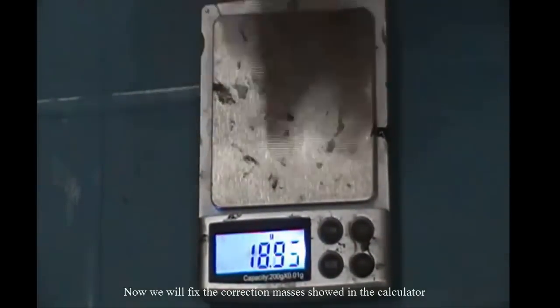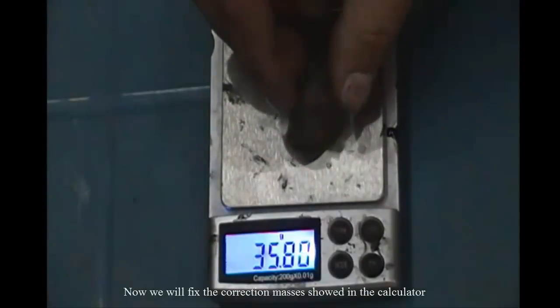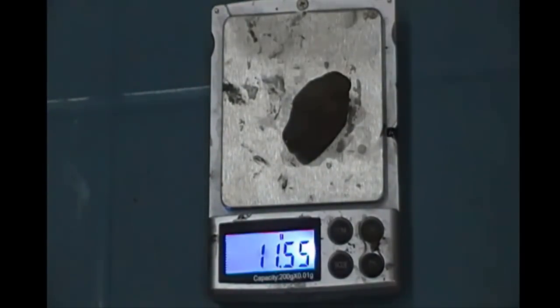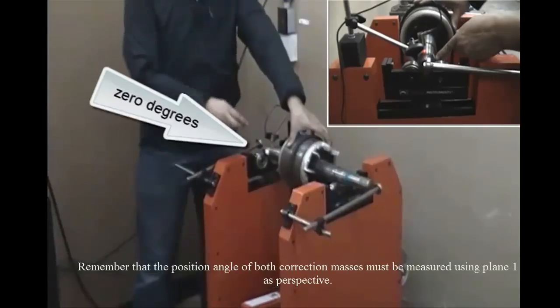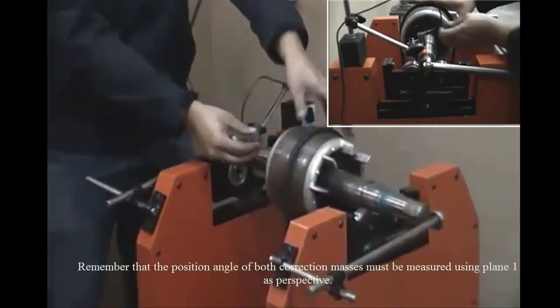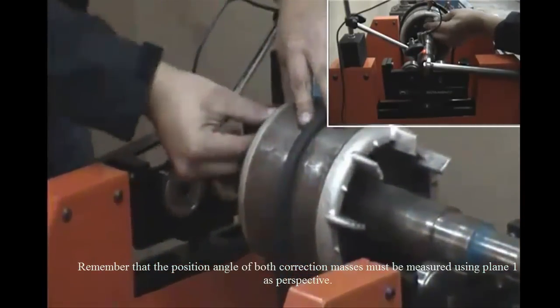Now, we will fix the correction masses showed in the calculator. Remember that the position angle of both correction masses must be measured using plane 1 as perspective.